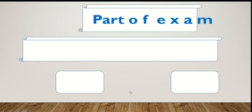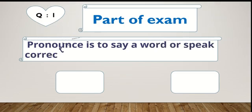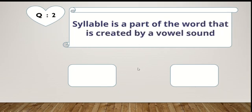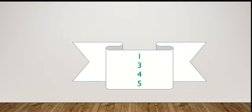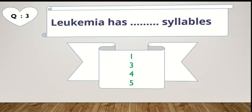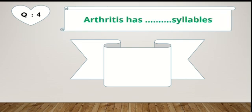Parts of the exam. Question one: pronounce means to say a word or speak correctly — true or false? Question two: a syllable is a part of the word that is created by a vowel sound — true or false? Question three: leukemia has one, three, four, or five syllables? Question four: arthritis has two, three, four, or five syllables?